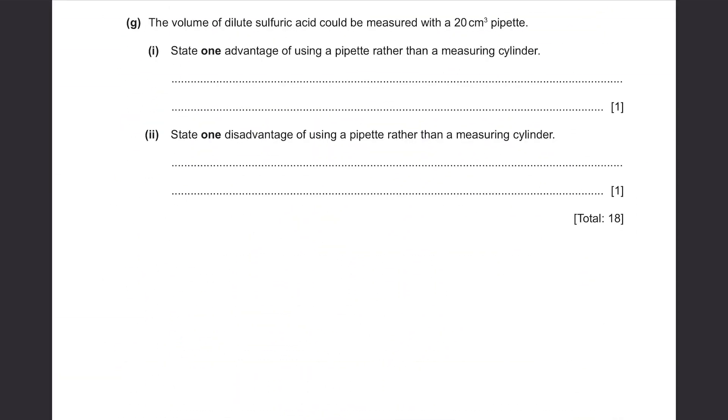Part G: The volume of dilute sulfuric acid could be measured with a 20 cm³ pipette. State 1 advantage of using a pipette rather than a measuring cylinder. Well, this is the apparatus that is known to be the most accurate, so it will be more accurate. State 1 disadvantage of using a pipette rather than a measuring cylinder. I'm not sure if you guys have used this before. I've used it when I was doing my A-level and they take super long to use. For measuring cylinder, you just have to pour it, check the reading, it's done. But for this, they're pretty difficult to use. So it's because it's slower.